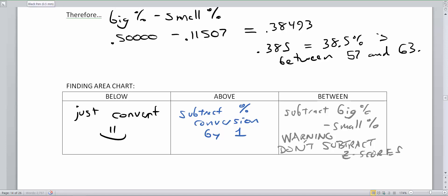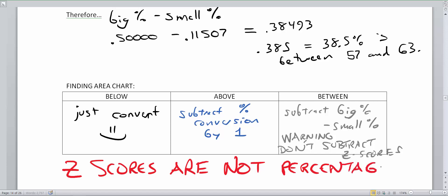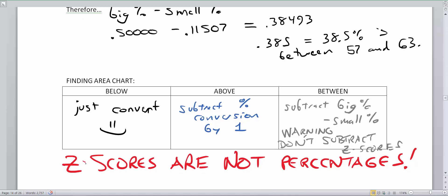And then one last statement in giant red ink. Z-scores are not percentages. But what we can do with a z-score is we can turn them into a percentage and figure out what percentile is below that z-score. A z-score tells you how many standard deviations you are away from the norm. A z-score does not, I repeat, does not represent a percentage.